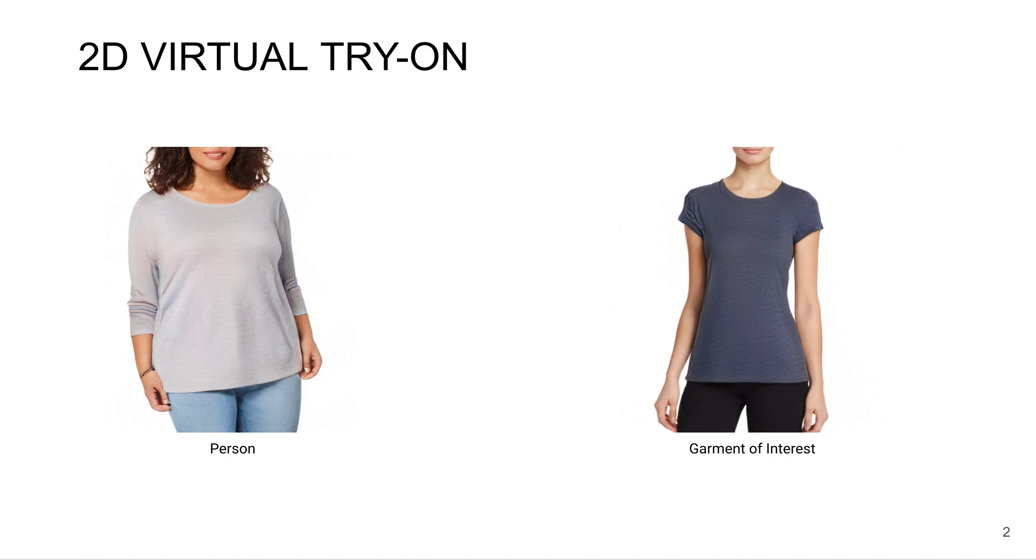Now this has many challenges. We have to transfer the shirt across different body types and different body poses. We have to make sure that we keep her identity the same, as well as her other garments. And we also have to learn to synthesize skin when going from a longer-sleeve shirt to a shorter-sleeve shirt. In particular, we wanted to focus on photorealism in high-resolution images.